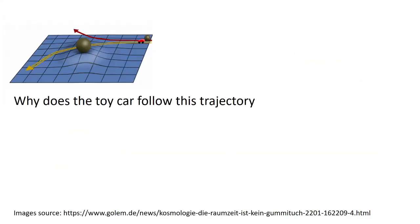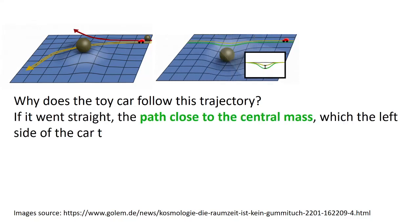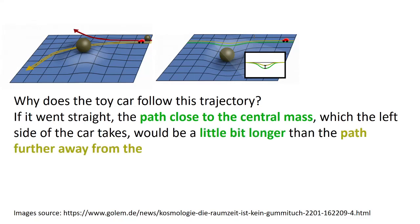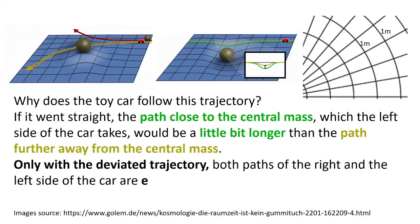Why does the toy car follow this trajectory? If it went straight, the path close to the central mass which the left side of the car takes would be a little bit longer than the path further away from the central mass. Only with a deviated trajectory, both paths of the right and left side of the car are equally long.